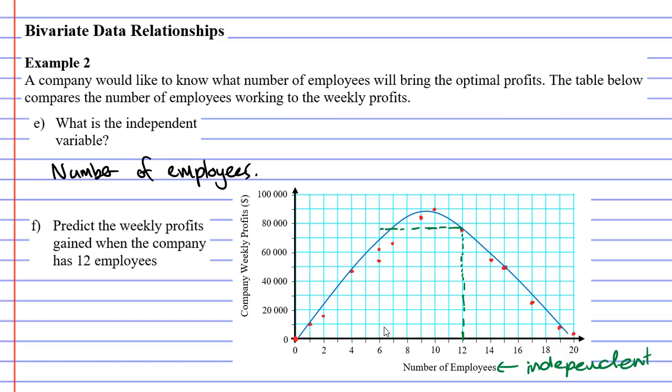We can now predict the company profits if they had 12 employees. It's somewhere around, let's say $77,000.